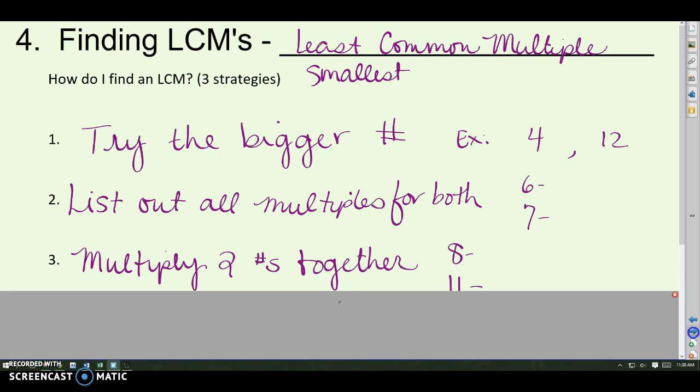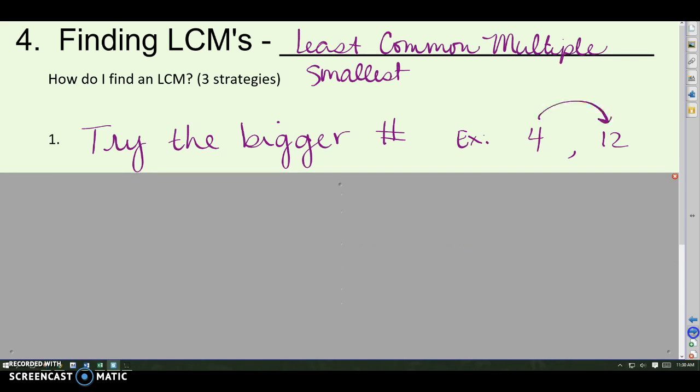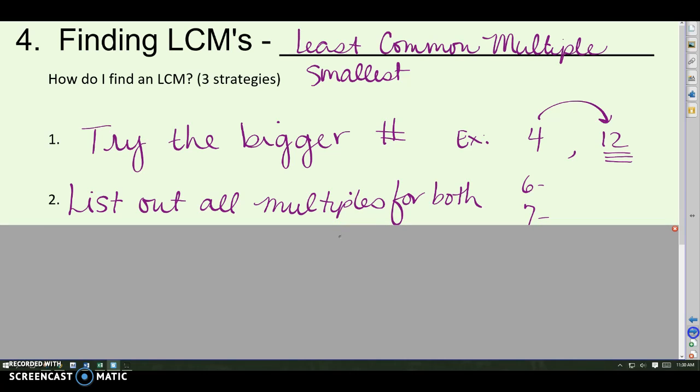Try the bigger number. So for example, in four and twelve, if four goes evenly into twelve, twelve is going to be your smallest common multiple that they both go into evenly. So four and twelve, the first thing they both go into is going to be twelve. Second way, list out all the multiples for both, and then find the smallest one that they share. So for example, multiples of six. Six, twelve, eighteen, twenty-four, and then thirty, thirty-six, forty-two. Let's stop there and see about seven. Seven, fourteen, twenty-one, twenty-eight, thirty-five, forty-two. Soon as I get one that they both share, that's my least common multiple for both of them. So forty-two.